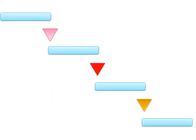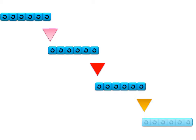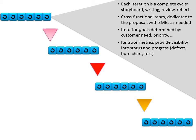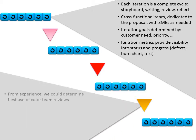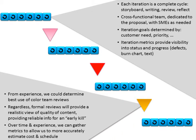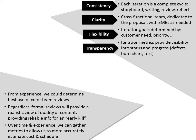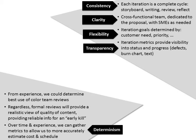Instead of long duration phases, we split up the writing into many iterations, with each iteration proceeding from storyboard through writing and review before beginning the next. Progress is easily determined by completed iterations and other process metrics. Executive management can participate more frequently and gain useful information to support decision-making. An Agile proposal development process can potentially provide all of the features we need for high-quality, cost-effective proposals.